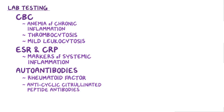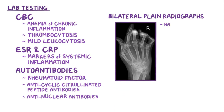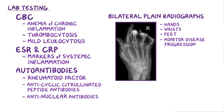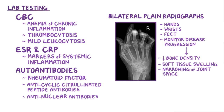A minority of individuals may have antinuclear antibodies as well. Bilateral plane radiographs of the hands, wrists, and feet are also important as a baseline for monitoring disease progression. Over time, changes might include decreased bone density around affected joints, soft tissue swelling, narrowing of the joint space, and bone erosions.